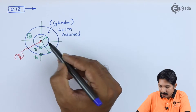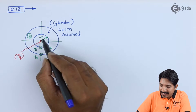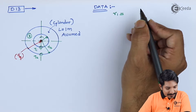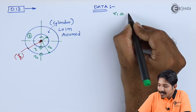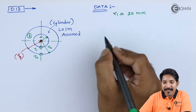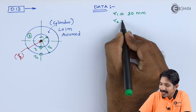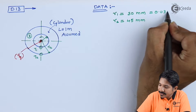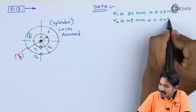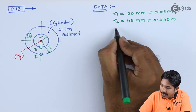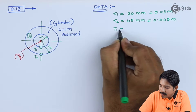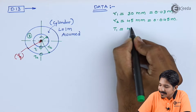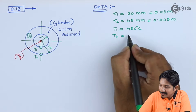We have drawn a schematic diagram — let us consider this is the hollow cylinder with internal radius r1. Writing down the data: internal diameter is 60 mm, so r1 = 30 mm; outer diameter is 90 mm, so r2 = 45 mm. Therefore r1 = 0.03 m and r2 = 0.045 m. The temperatures given are T1 = 450°C and T2 = 300°C.